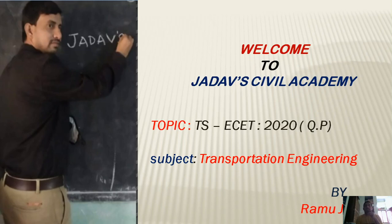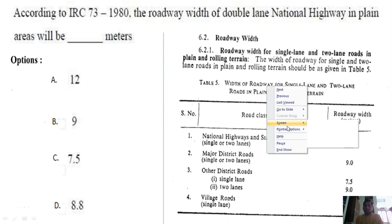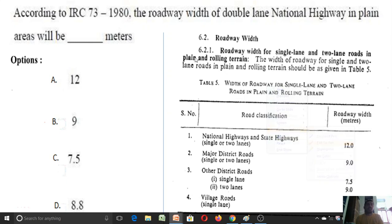Hi, hello, welcome to my channel Jado Civil Academy. In this class, I am going to discuss TSEZ 2020 question paper solutions for transportation engineering questions. So let us start our discussion. The first question asked in transportation engineering in TSEZ 2020 question paper is: according to the IRC 73-1980, the roadway width of a double lane national highway in plain area will be...